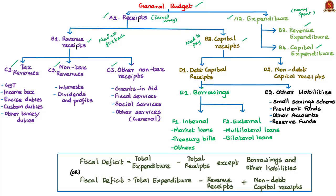Tax revenues means the money that the central government collects by levying taxes or duties on its citizens for goods and services traded. These include GST, income tax, excise duties, customs duties and other minor taxes. Non-tax revenues are the money the central government gets as revenue other than taxes — in the form of interest, dividends and profits. Other non-tax receipts include contributions from foreign nations as grants, and money earned through fiscal, social and other general services.